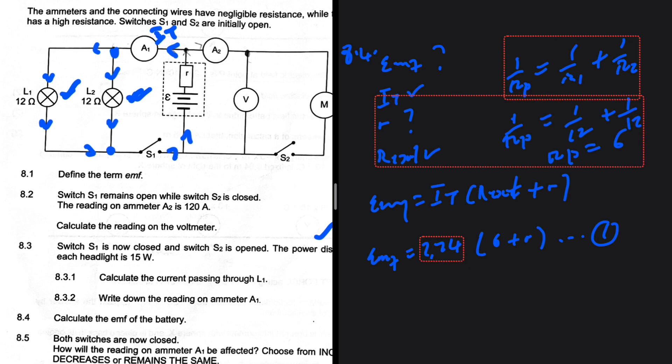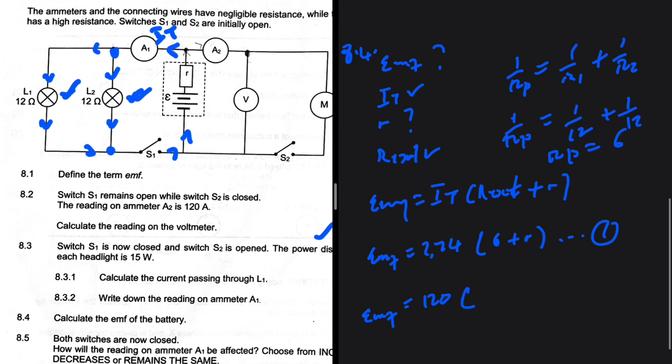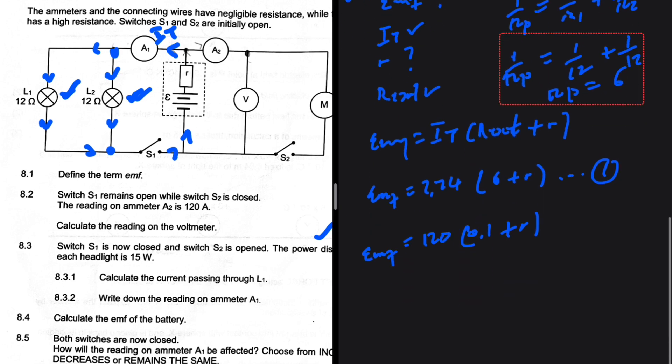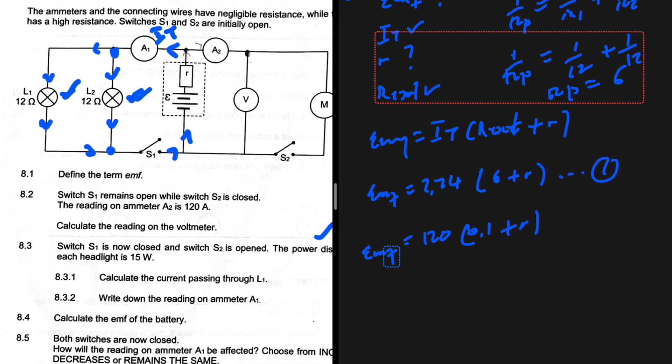So equation 2, we're going to use that instance where S1 is open and S2 is closed. The emf in that instance will be equal to the total current in that instance, which was 120, right? R external 0.1 plus R. So emf is the same. It does not change. So 2.24 multiplied by 6 plus R should be equal to 120 times 0.1 plus R.